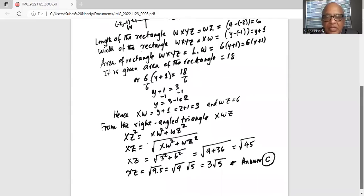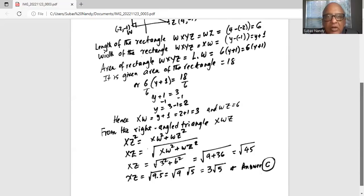So XZ is equal to the square root of 9 times the square root of 5. Now the square root of 9 is 3, so XZ is 3√5.